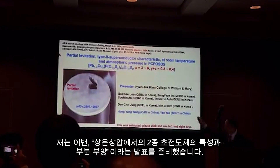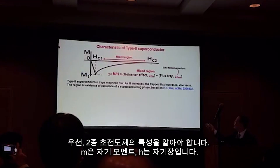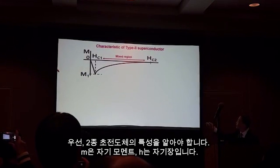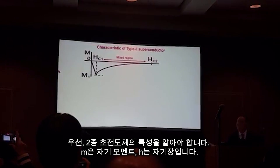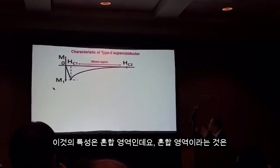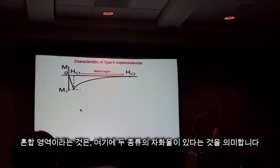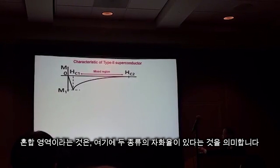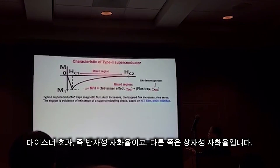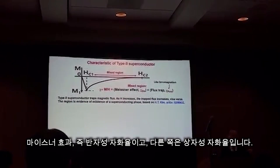We get important information. First of all, we have to know the characteristics of type 2 superconductors. As you know, M is the magnetic moment, H is the magnetic field. The characteristic is a mixed region. The mixed region meaning is two kinds of magnetic susceptibility: the Meissner effect is diamagnetic susceptibility, and the other stage is paramagnetic susceptibility.